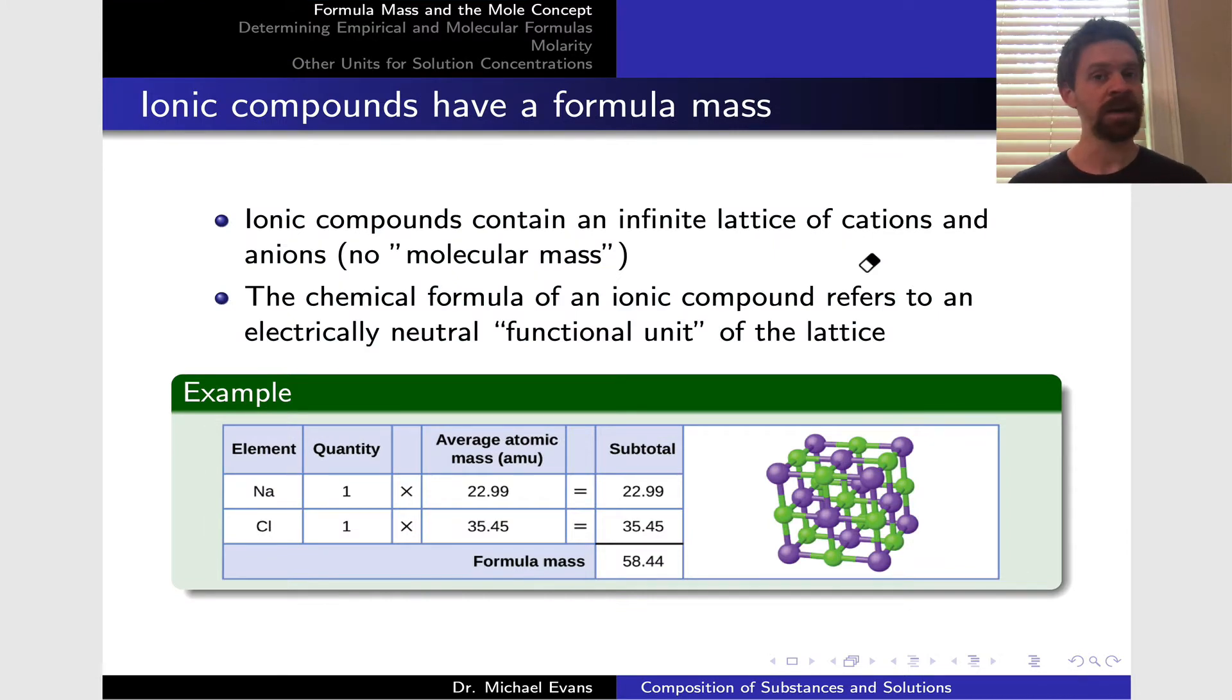What about ionic compounds? Ionic compounds also have a formula mass, but they're different from molecular compounds in that they correspond to an infinite lattice of cations and anions. There's no discrete molecule within an ionic compound, so there's no molecular mass we can talk about. But we can define a functional unit that corresponds to the empirical formula. For example, in sodium chloride, the empirical formula is NaCl with one Na for every one Cl.